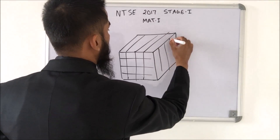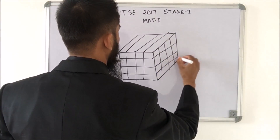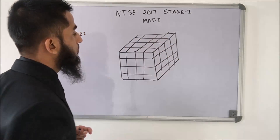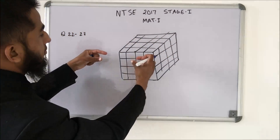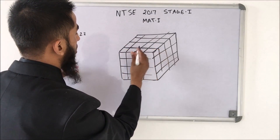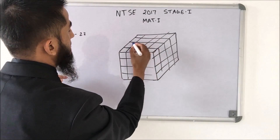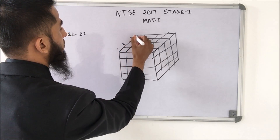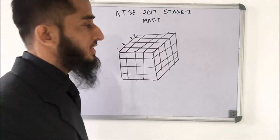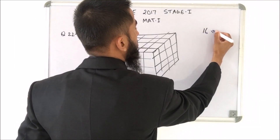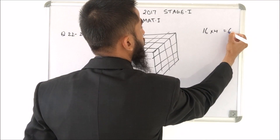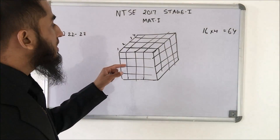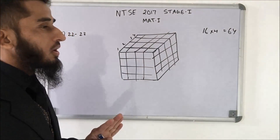Similarly, continuing like this, each block has 16 small cubes. With 4 blocks of 16, I will have 64 small cubes in total. Now question number 22 asks how many cubes will have no faces painted when all cube surfaces are painted blue.